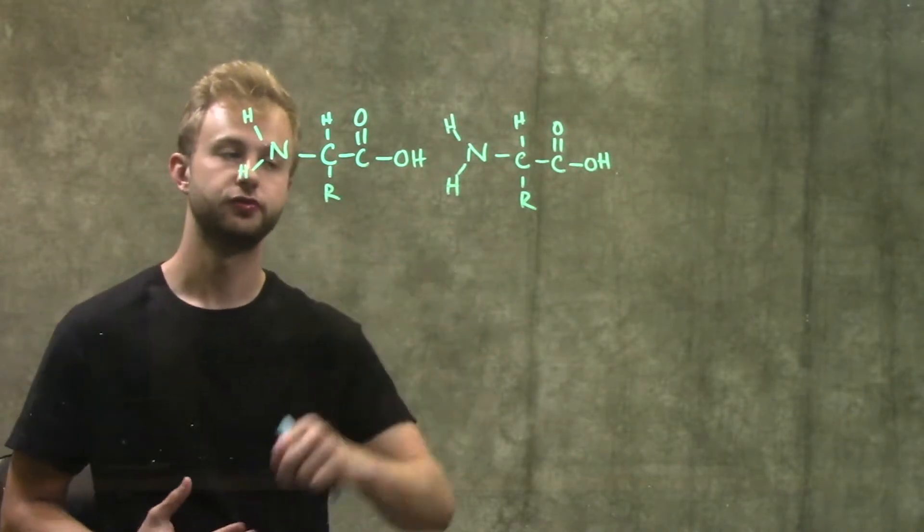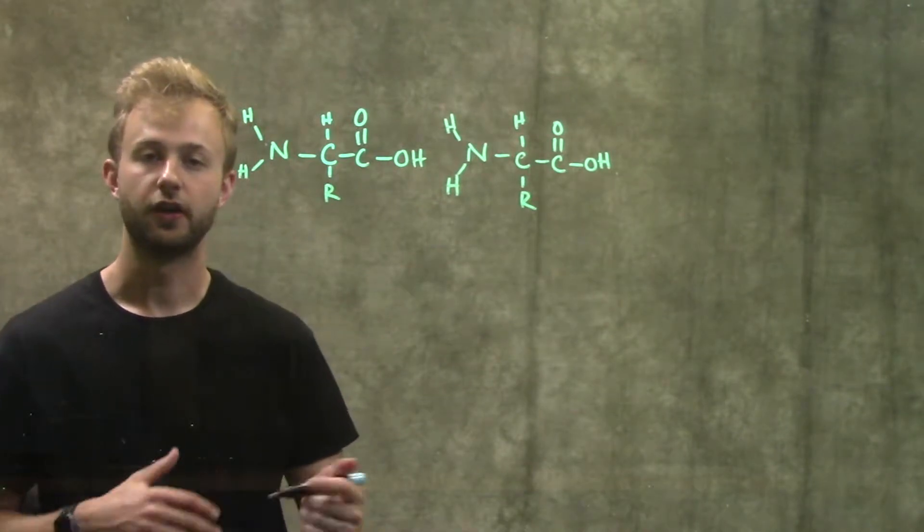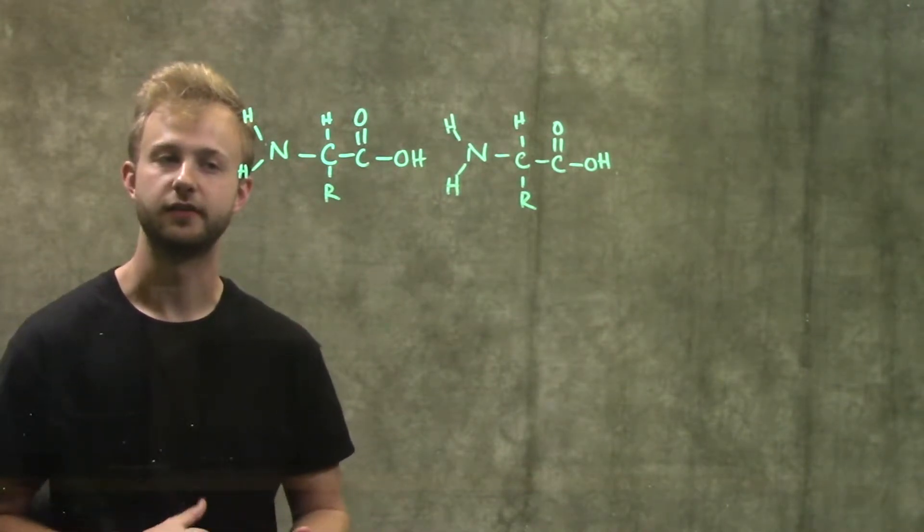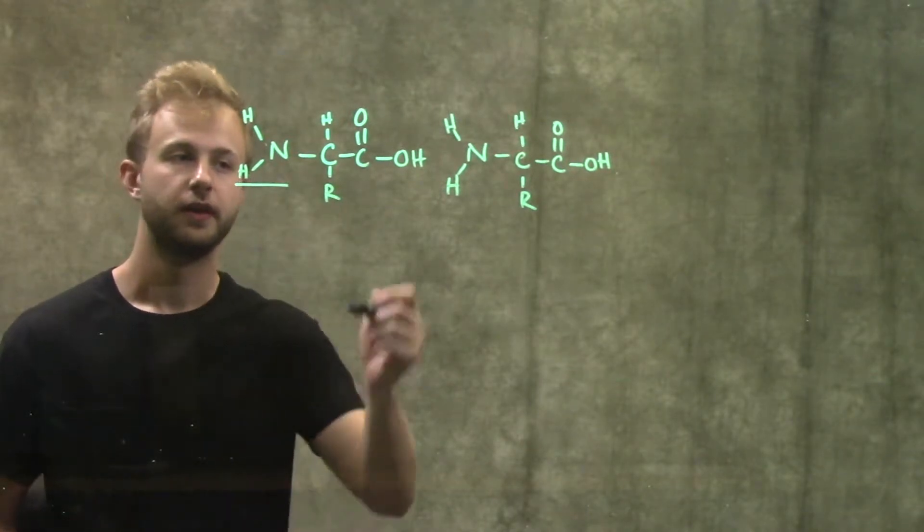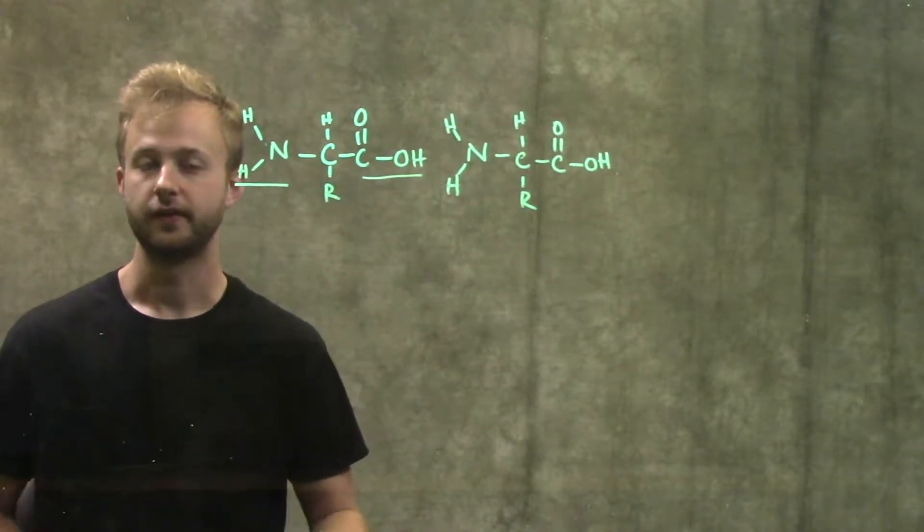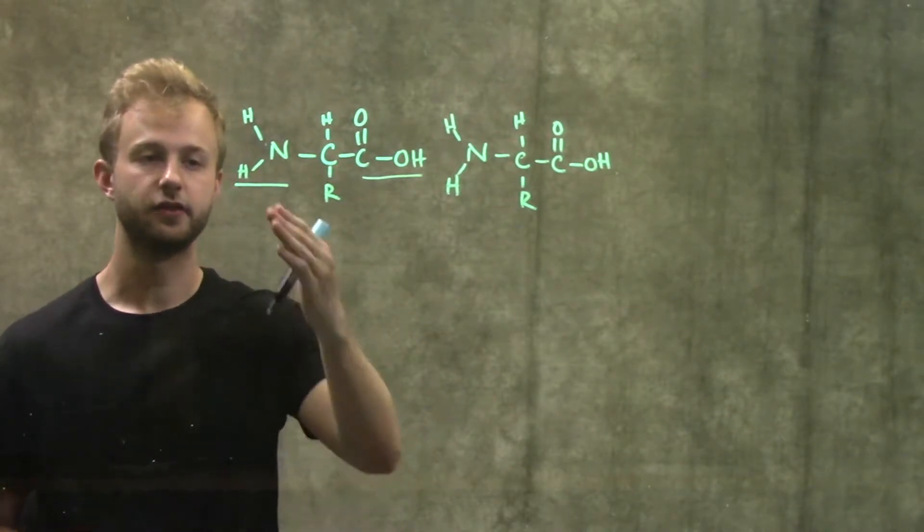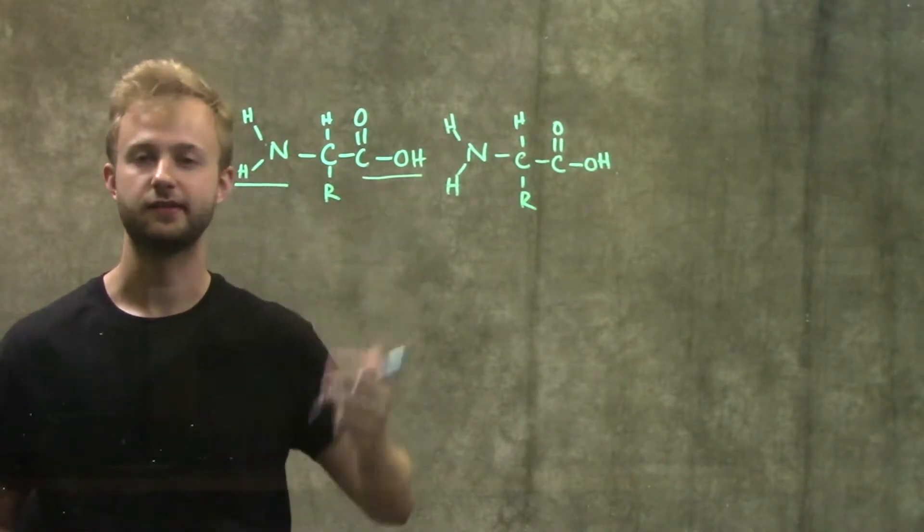Right here I've drawn two general structures of amino acids. There are a couple of functional groups that you might recognize in these molecules. Every amino acid is going to have an amino group as well as a carboxylic acid group. That's easy to remember because they're amino acids, so left to right would be amino acid.